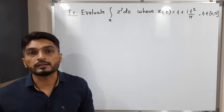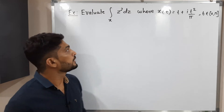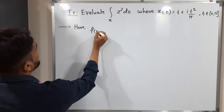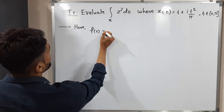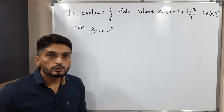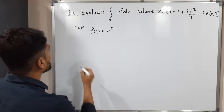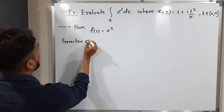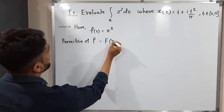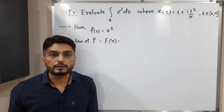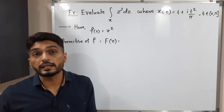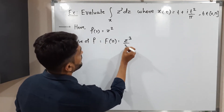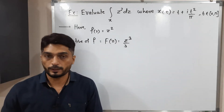In our previous video we already saw that result, and we are going to use it here. So what is small f of z? We have to find the integration of this function, so our small f of z is Z square. Let us find its primitive. The primitive of small f is denoted by capital F of z. The primitive is nothing but the anti-derivative or integration. The integration of Z square is Z cube by 3, so capital F of z equals Z cube by 3.